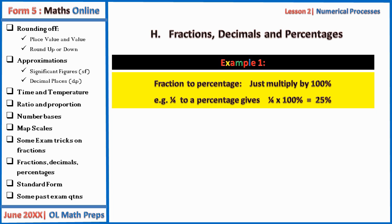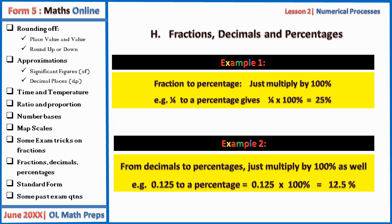Note that to convert from fractions to percentages, multiply by 100%. For example: one quarter times 100% equals 25%. Similarly, to convert from decimals to percentages, multiply by 100%. For example: 0.125 times 100% equals 12.5%.